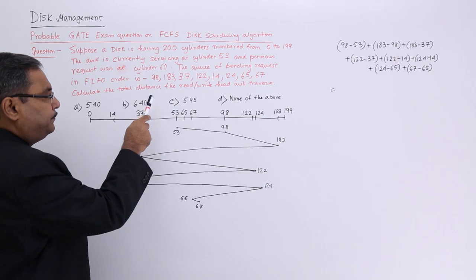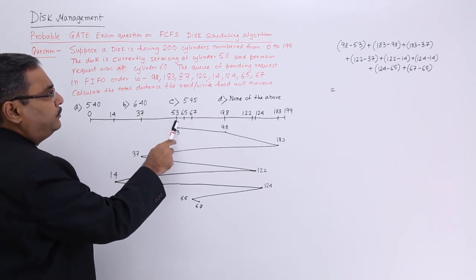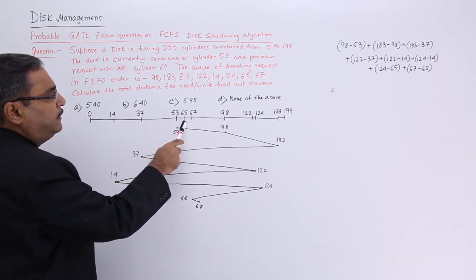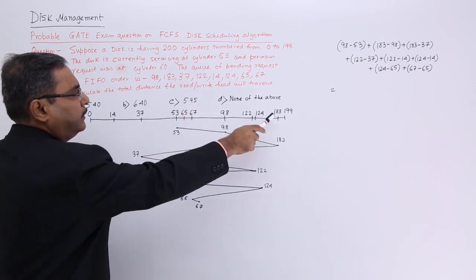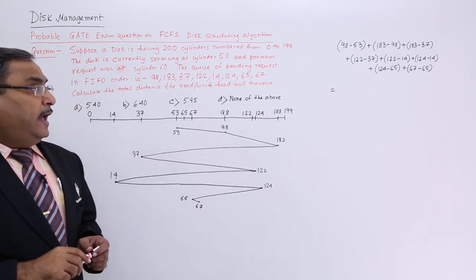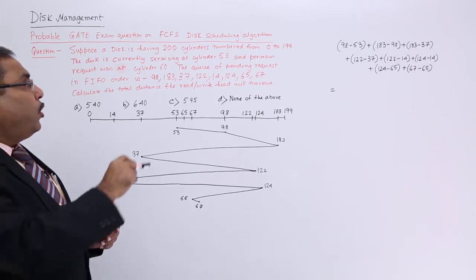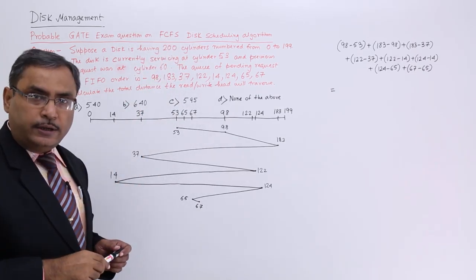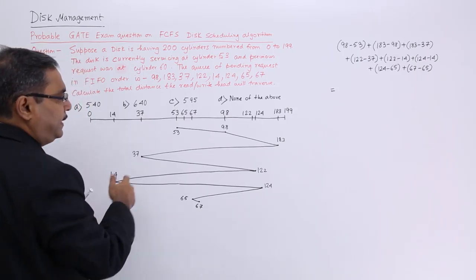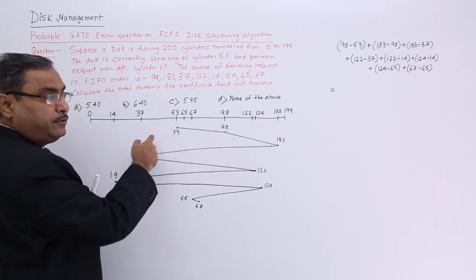So here it will be starting with 0 obviously, and here it will be ending at 199. And here I have written 14, 37, 53 is there, 65, 67, 98 is there, and rest I have written as it is in this order only. And in the FCFS disk scheduling, I should be doing in this way.